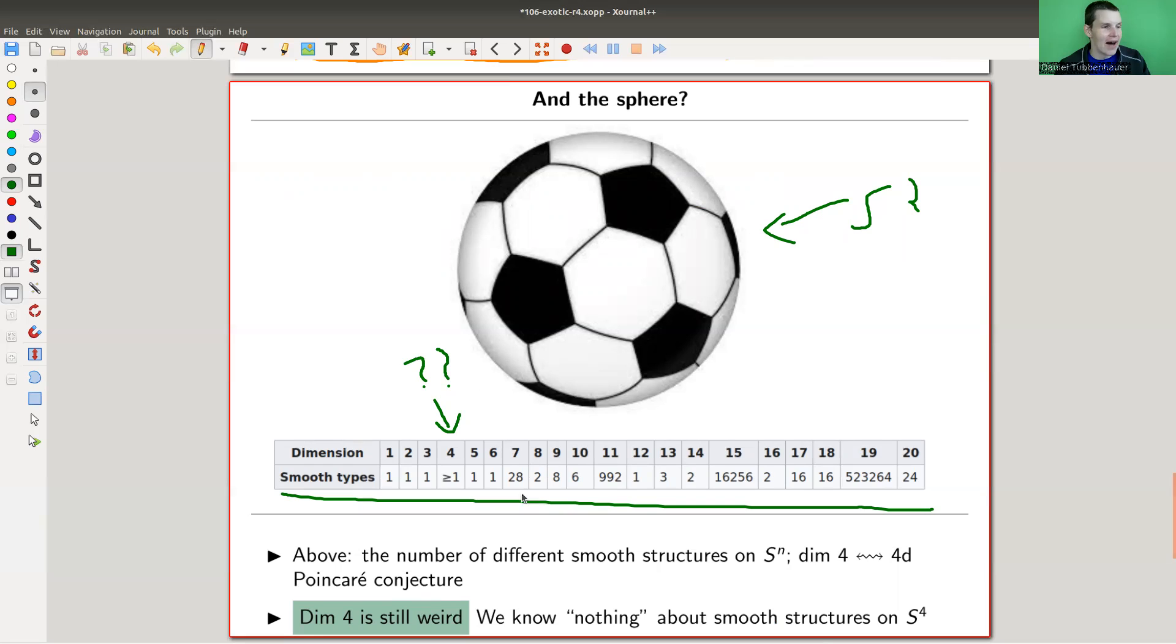Anyway, and then it goes on. And dimension seven, you have 28. And then dimension 12, you have again one. In dimension 19, you have five, two, three, two, four, six, four. So it gets pretty random. Kind of the number of ways to do calculus on a sphere gets pretty random.